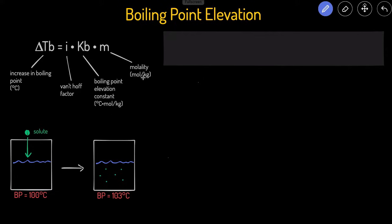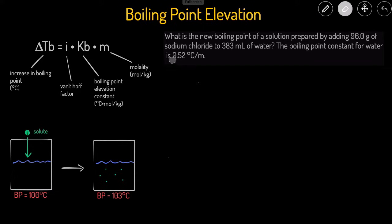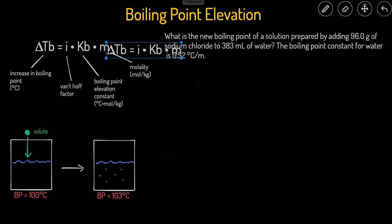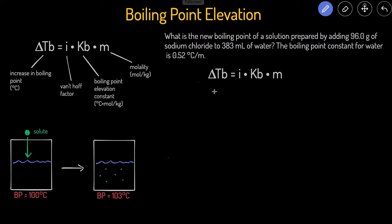Let's take a look at how we can use this equation in a problem. The problem is asking: what is the new boiling point of a solution prepared by dissolving 96 grams of sodium chloride in 383 milliliters of water? It tells us the boiling point elevation constant for water. Our goal is to solve for the new boiling point, so we need to first solve for the change in the temperature of the boiling point.